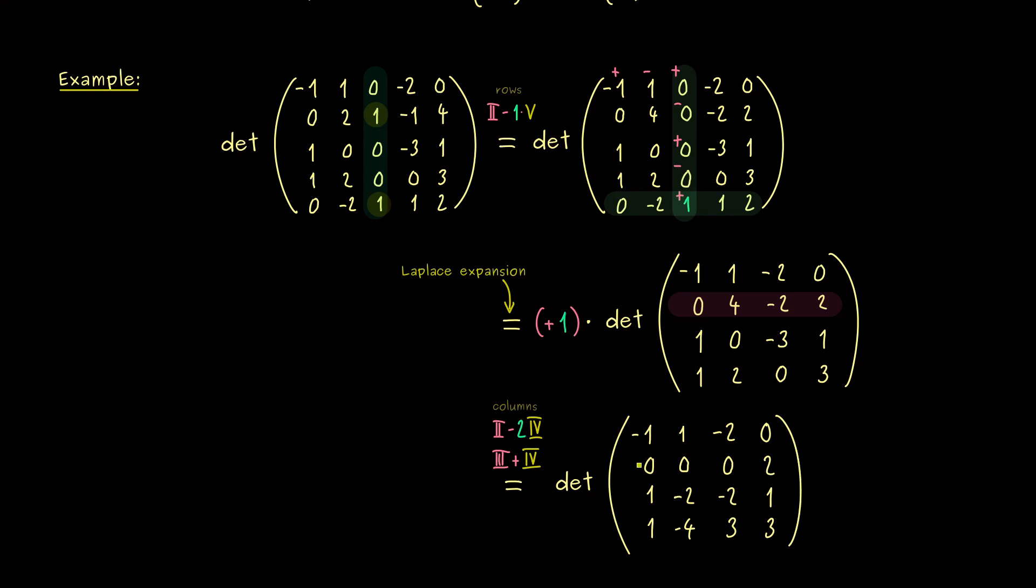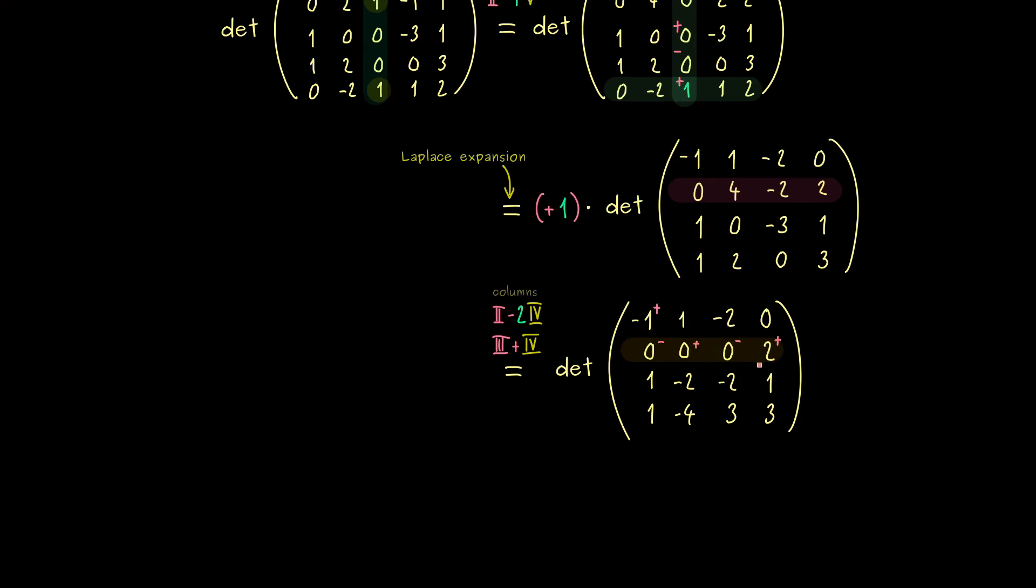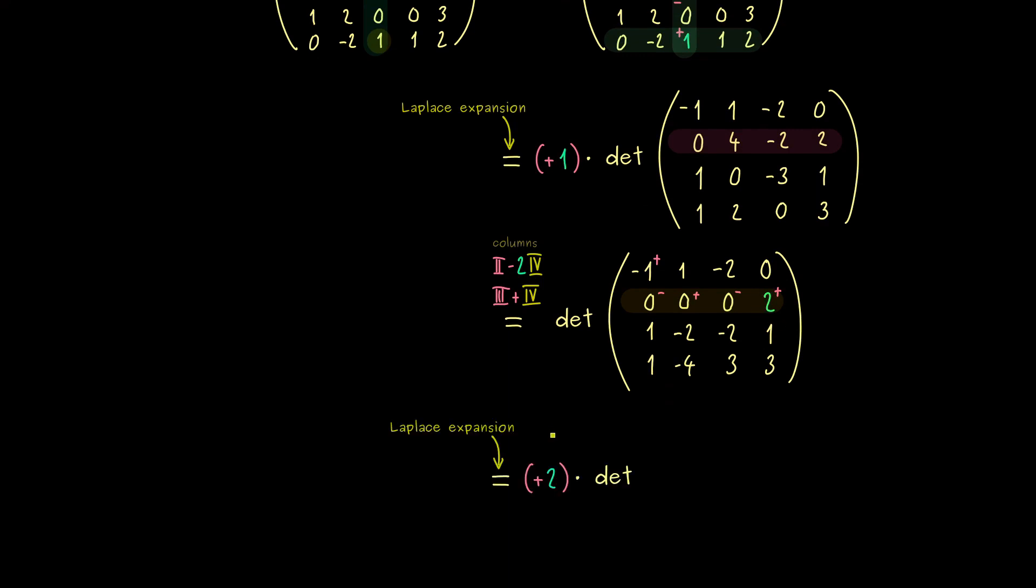So you see again not so complicated the first column and the last column are not changed at all. And moreover we have a very nice row here where we can use the Laplace expansion again. And of course we will not forget what this sign is here. So it's plus again but now we should not forget about the factor 2 here.